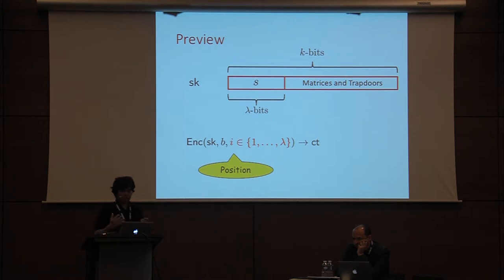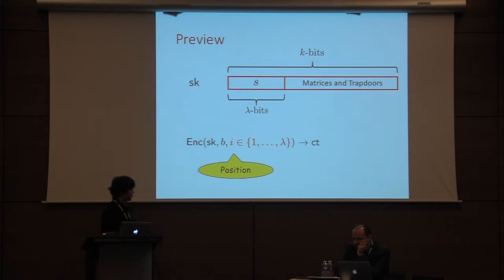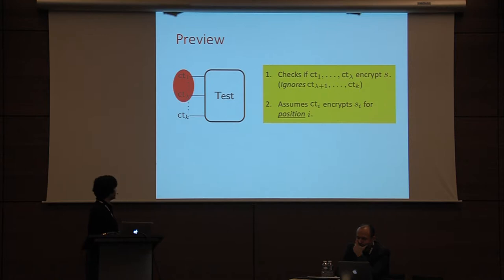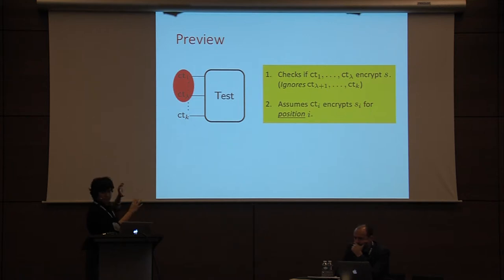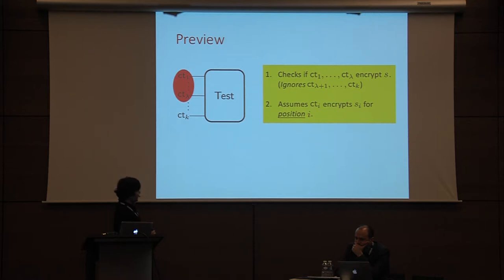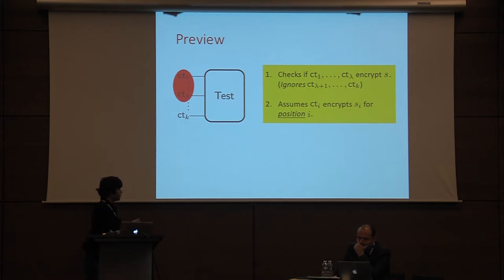If you want to encrypt some bit b, you can redundantly encrypt it for all positions, giving a big final ciphertext. For simplification, we assume the encryption algorithm takes this position as input. The test algorithm, since the secret key is k bits long, takes k ciphertexts and works on the first lambda of them, checking whether they encrypt the string s. The important property is that the i-th ciphertext should encrypt s_i, the i-th bit of string s, for position i.